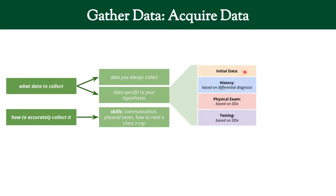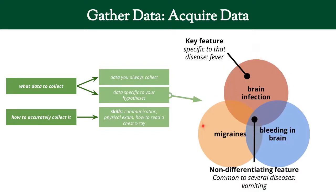Now let's look at things that are specific to your hypotheses. You're probably not going to have any specific differential with the first data you get, like vital signs or chief complaint. But when you go into your history, you're going to base it on your differential diagnosis, and similarly for physical and testing. The point is that you'll have multiple diagnoses — represented by overlapping circles — with some overlapping symptoms and signs. For example, with a headache, bleeding, migraines, and brain infection may all present with vomiting. But fever might be specific to only one diagnosis, making it a key differentiating feature.